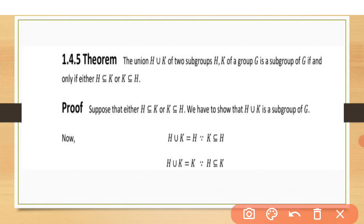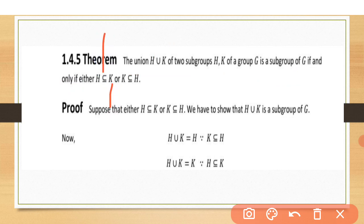We have a theorem that the union H∪K of two subgroups H and K, where H and K are subgroups of G, is also a subgroup of G if and only if H is contained in K or K is contained in H. It means all the elements of H are in K, or all the elements of K are in H. By this condition, the union of H and K will be a subgroup of G. Let's start the proof.